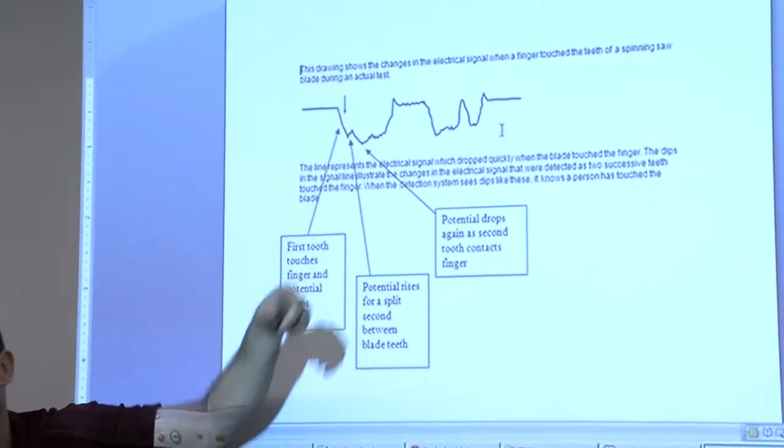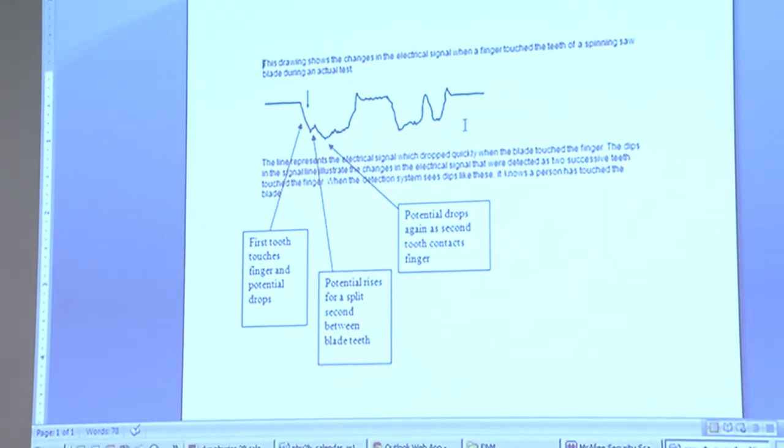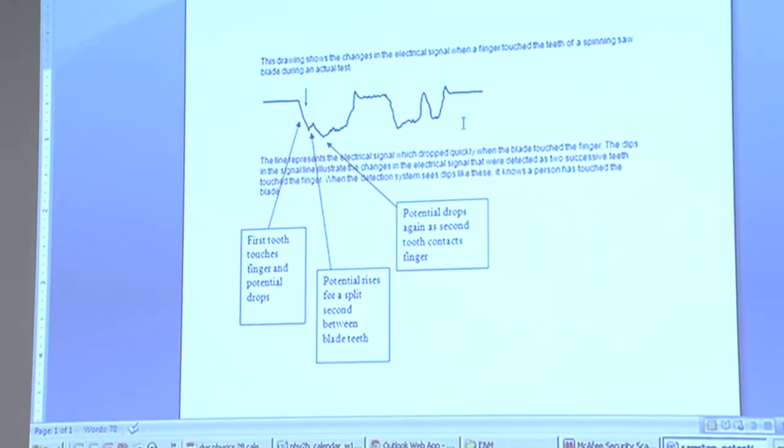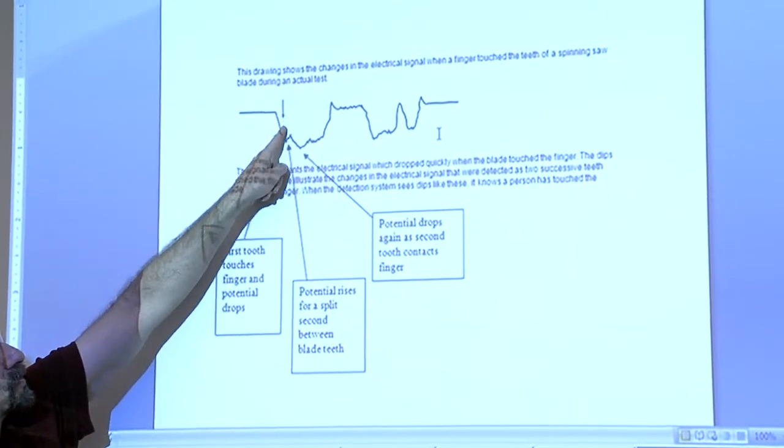The potential goes down because that electrical signal is being spread over a much larger area. It drops the potential. Look at the kind of resolution he has.